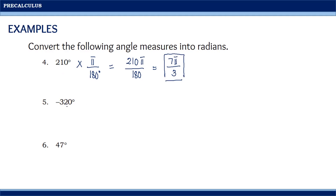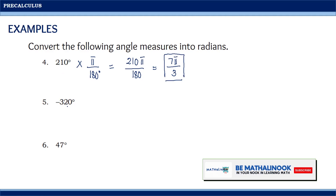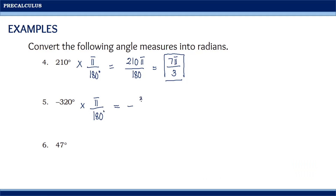For the next one, we have negative 320 degrees. Multiplying by π over 180 degrees, we get negative 320π over 180. Reducing to lowest terms — both numbers are divisible by 20 — the final answer is negative 16π over 9.